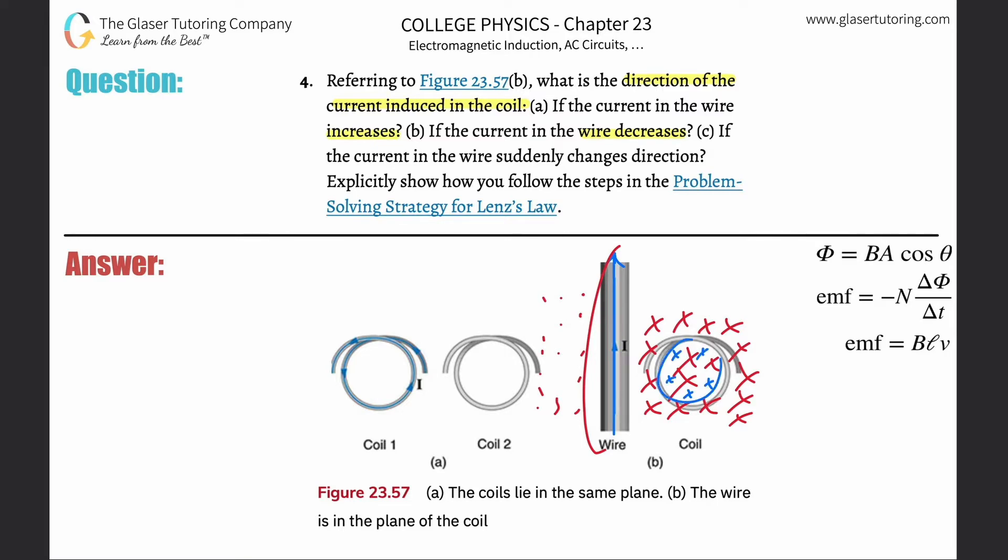The only way to do it is to put more Xs in here again. And the only way you're going to get more Xs in here is if the current that's passing through this loop is moving in a clockwise fashion. Use right-hand rule number two. Clockwise.